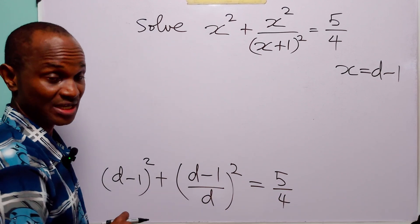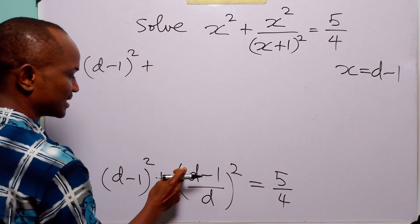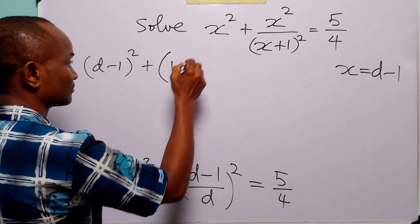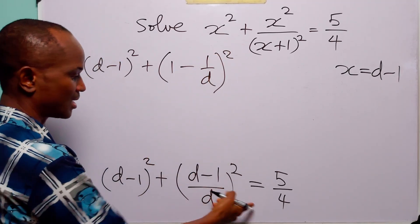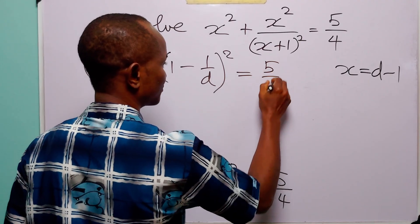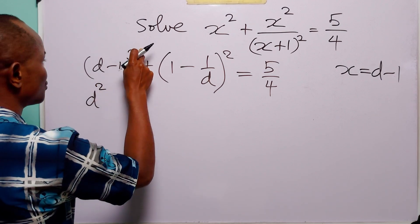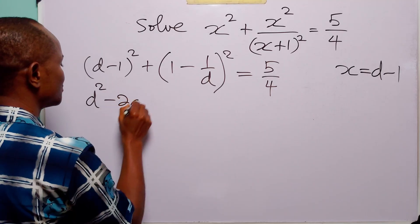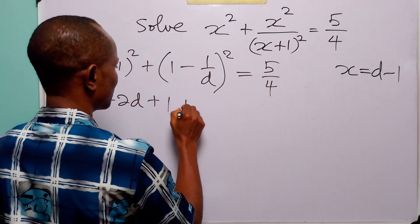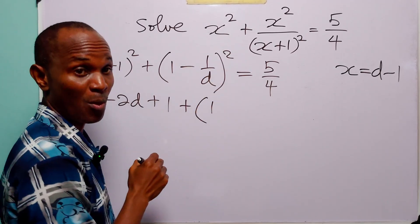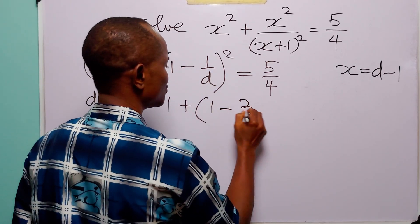Now when we expand this bracket we have d squared, then 2 times d times minus 1, which is minus 2d, then minus 1 squared which is 1. Then here we have 1 squared which is 1, then 2 times 1 times minus 1 over d, which gives us minus 2 over d.